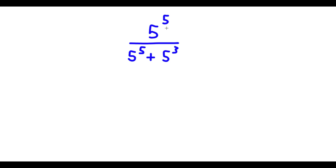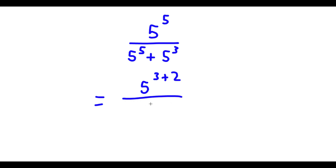Alright, so I have 5 to the power of 5 over 5 to the power of 5 plus 5 to the power of 3. Now, this is the same thing as 5 to the power of 3 plus 2. So I'm going to replace the exponent 5 with 3 plus 2 in the numerator, and also replace the 5 in our denominator with 5 to the power of 3 plus 2, and then I have my plus 5 to the power of 3.